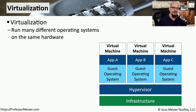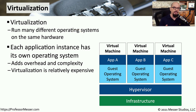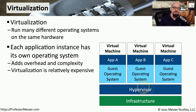The services we're using in the cloud are often running on many different operating systems, but all of those operating systems are executing on one single physical piece of hardware. This is virtualization, and it allows us to run many different operating systems on the same physical device. Looking at a block diagram of this virtualization, it starts with the hardware itself — the infrastructure in place — and on top of that, we're running a piece of software called a hypervisor. The hypervisor is the management software that manages all of the different operating systems running on this computer.